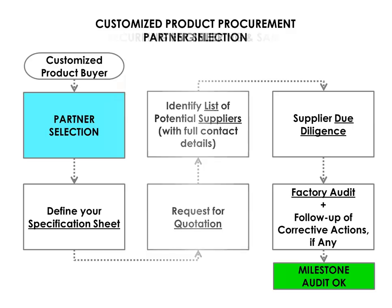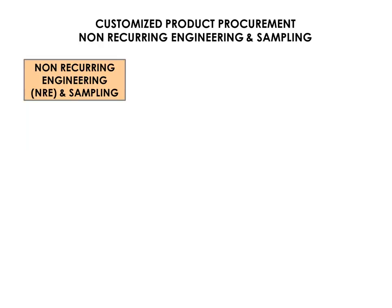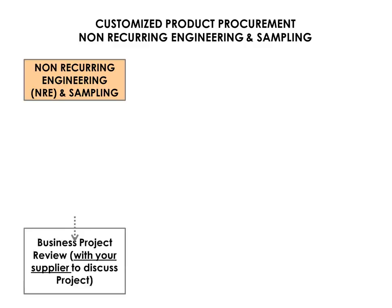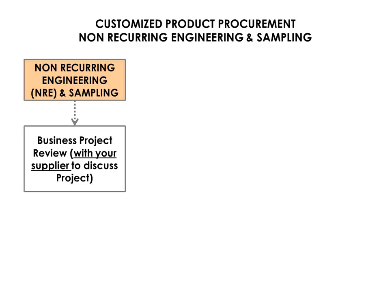The next phase is the non-recurring engineering and sampling phase. This is where any tooling, for example, will be commissioned. The first step is to have a business project review meeting with your supplier to go through the project plan in detail with respect to their involvement. Be sure to outline your expectations and the deliverables during this meeting.